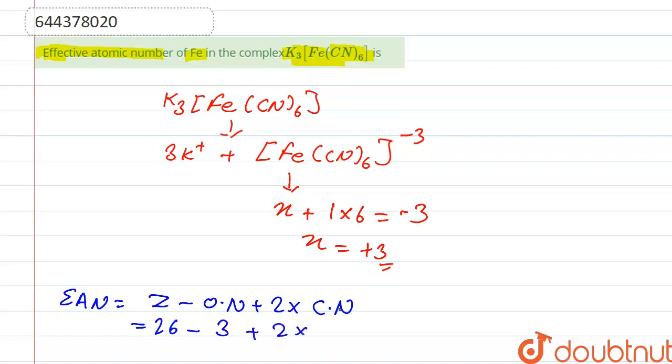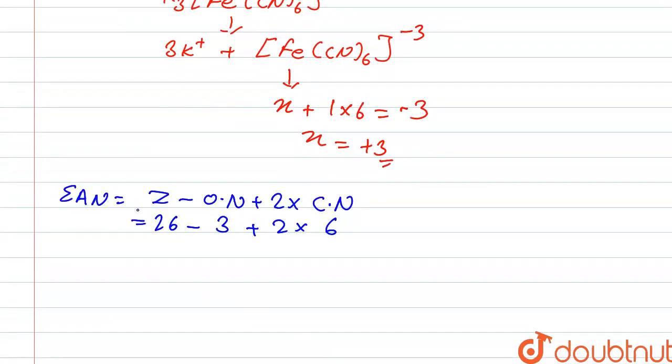So after we solve this we get the effective atomic number that is of iron, the effective atomic number of Fe is 35. Thank you